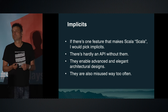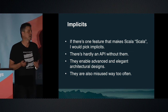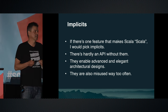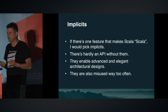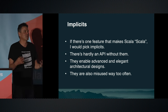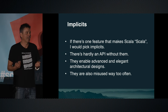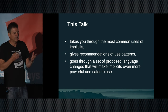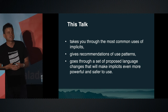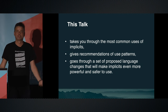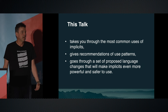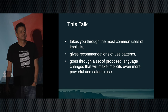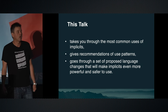I believe that if there's one feature that makes Scala Scala, I would pick implicits, because there's hardly an API without them. They enable very advanced and very elegant architectural designs, and they're also misused way too often. They are essentially the cornerstone of what we are grappling with when we do Scala, in a good sense and in a problematic sense. In this talk, I want to take you through the most common uses of implicits, give you recommendations on good and not-so-good use patterns, and proposed language changes that will make implicits even more powerful and hopefully safer to use.